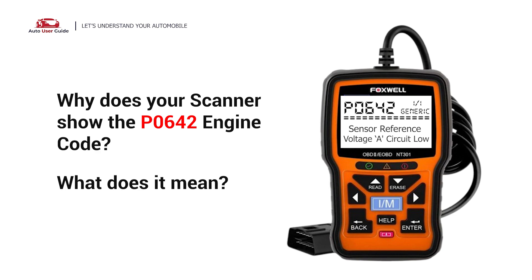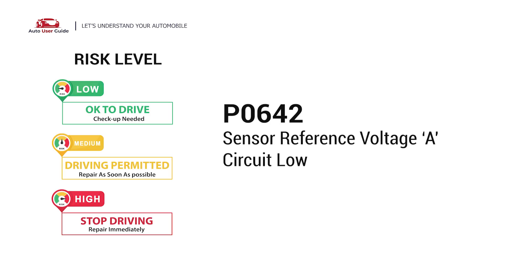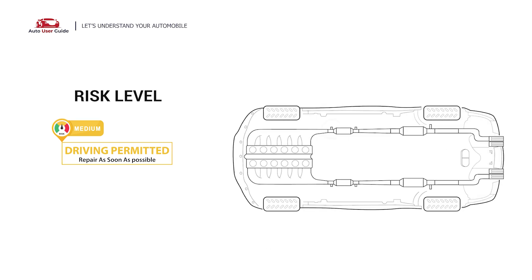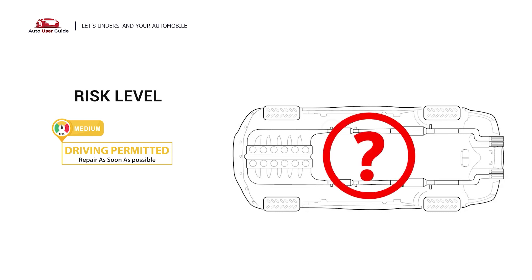Why does your scanner show the P0642 engine code, and what does it mean? The P0642 engine code stands for the Sensor Reference Voltage A Circuit Low. This code means that the Powertrain Control Module, or PCM, has detected a low reference voltage signal for a particular sensor that has been given the designation A.